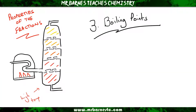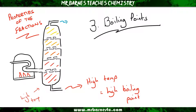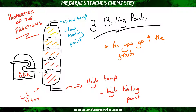The third property is boiling points, and this one's fairly straightforward. If we've got a high temperature at the bottom, it means it's going to have a high boiling point, and if we have a low temperature at the top, it's going to have a low boiling point. Therefore, as you go up the fractionating column, the boiling points decrease.